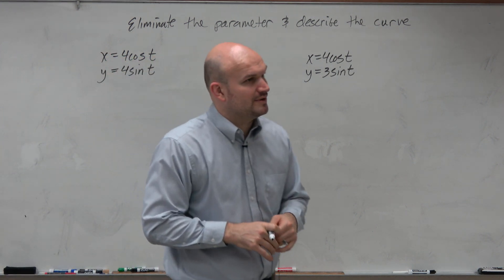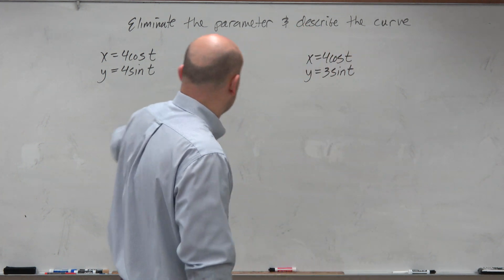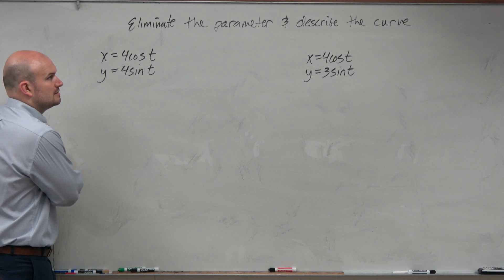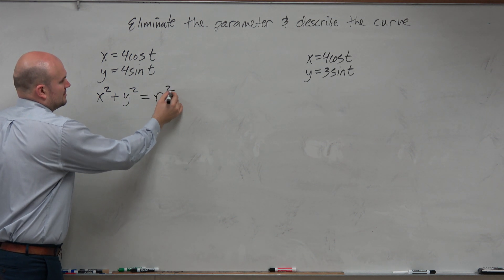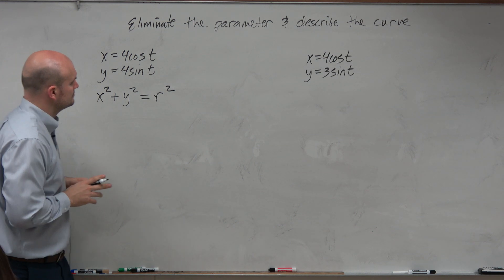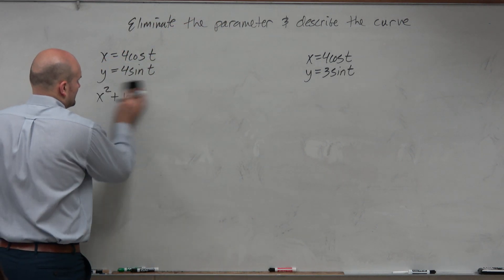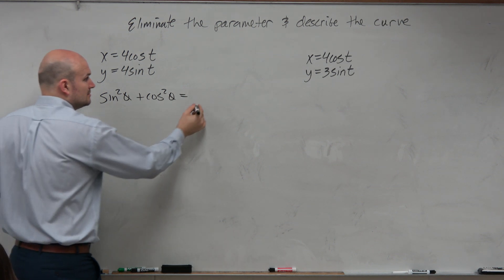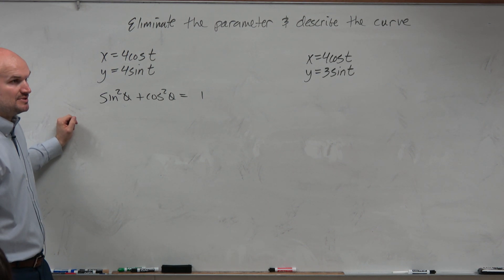And what we need to do is actually go back to some things that we have previously taught. What about this? Sine squared of theta plus cosine squared of theta equals 1. So could we solve for sine and cosine in both these examples? Sure.